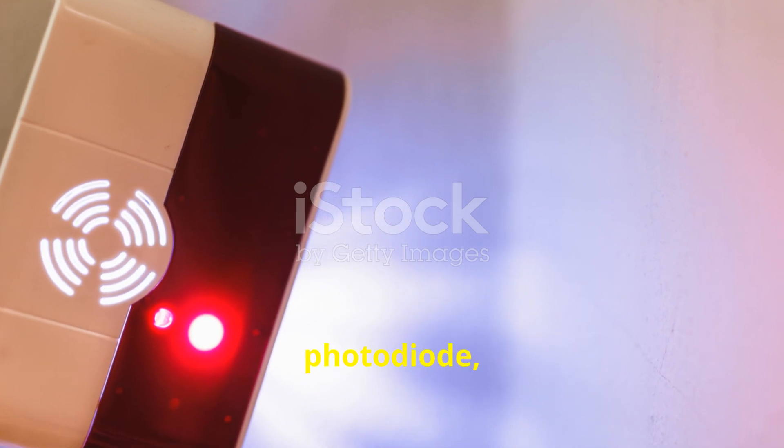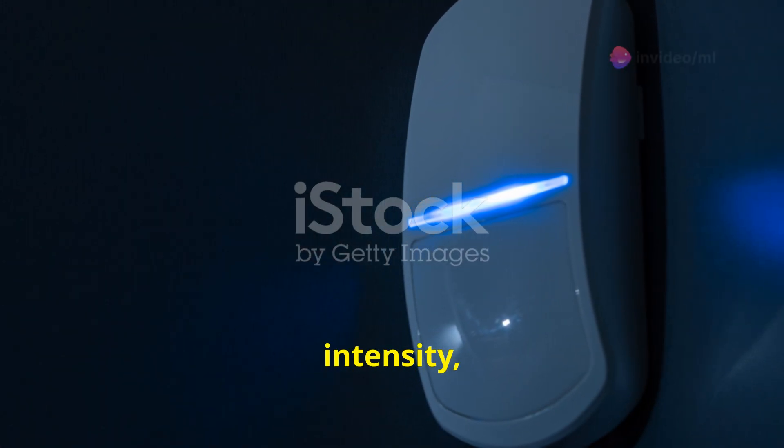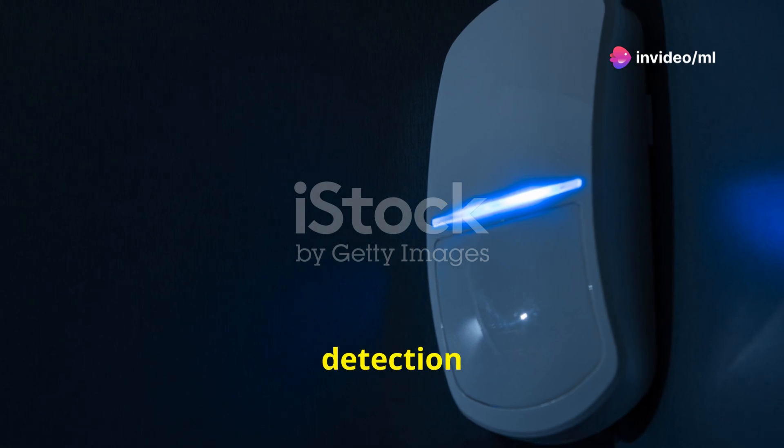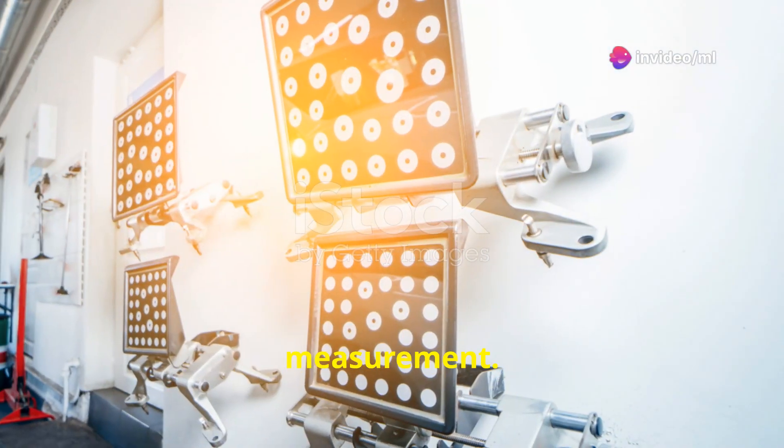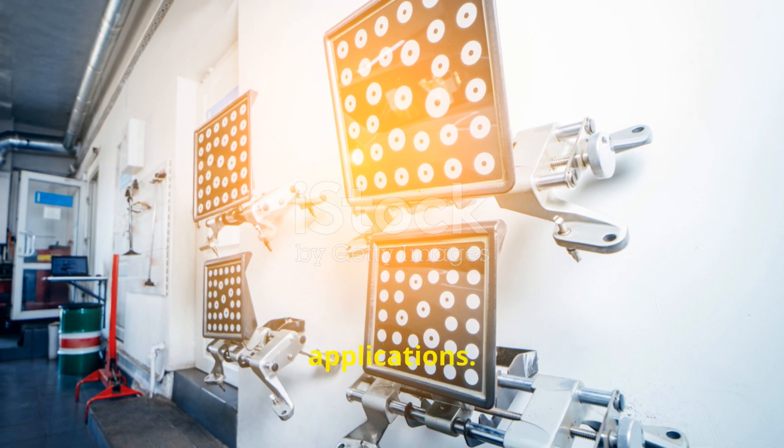When light strikes the photodiode, it generates an electrical current proportional to the light intensity, allowing for precise light detection and measurement. This principle is fundamental in various scientific and industrial applications.